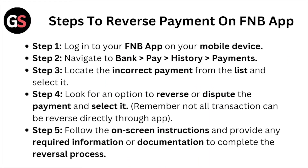Step number one: log into your FNB application on your mobile device. Step number two: navigate to the bank pay history payments. Step number three: locate the incorrect payment from the list and select it.